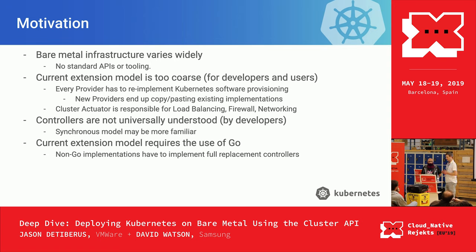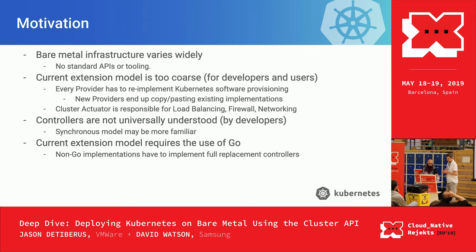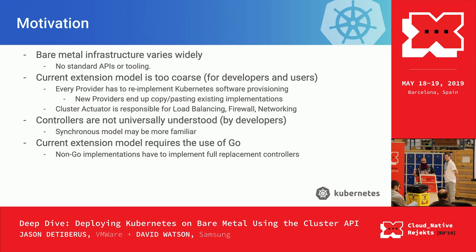The current model is too coarse — it's not possible to mix and match portions of providers. Each implementation covers the entirety of the machine and cluster controllers, and you can't swap those components in and out. Also, controllers are not universally understood by developers. Getting people to understand edge-level logic and the idiosyncrasies of a Kubernetes controller is a tough learning curve. The synchronous model that webhooks provide may be more familiar to users who are interfacing directly with infrastructure APIs.